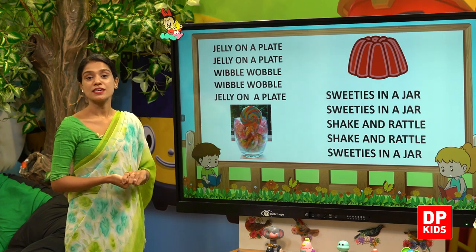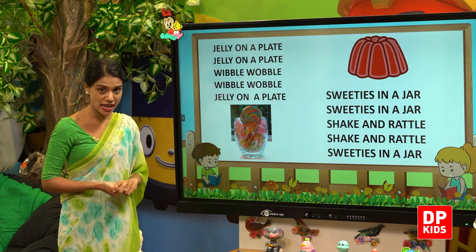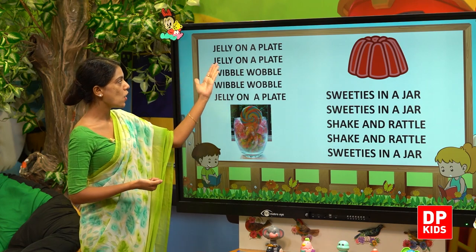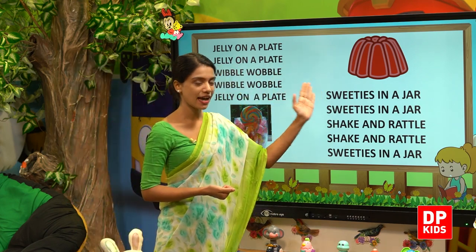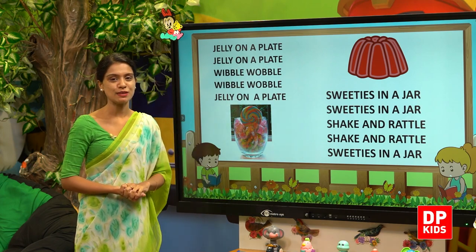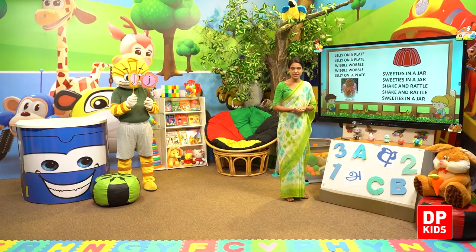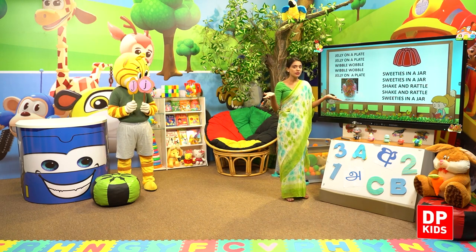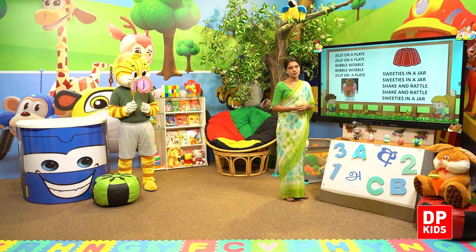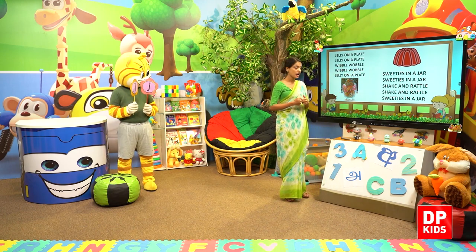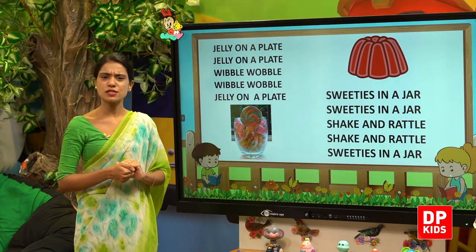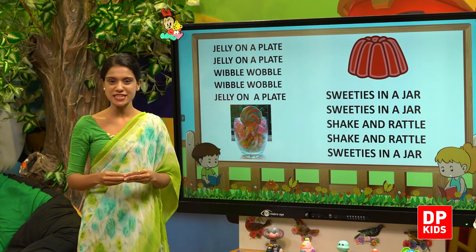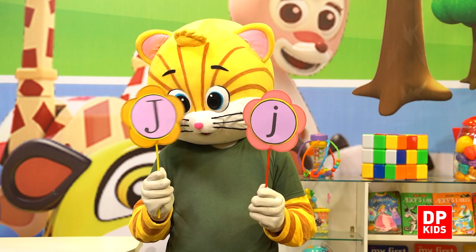So my children, today our letter is letter J and the sound is J sound. Jelly on a plate — this is jelly. I hope all of you know what jelly is, and I'm sure you all like to eat jelly. That's why we say wibble wobble, wibble wobble — jelly on a plate. And sweeties in a jar — J sound.